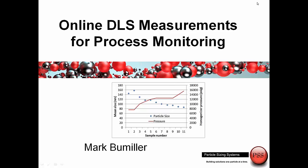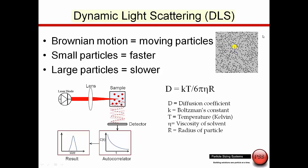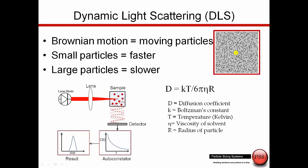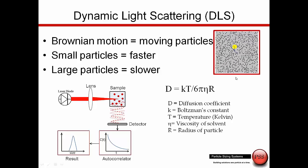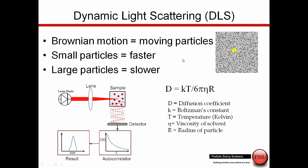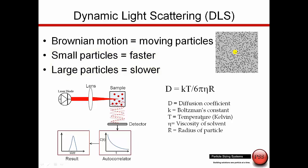The presentation today is on the topic of online DLS measurements for process monitoring. The technique we're using is dynamic light scattering. Dynamic light scattering picks up on the motion due to the Brownian motion of particles suspended in liquid. The liquid molecules impact the particle and it has a random thermal motion. That thermal motion is dependent on several things: smaller particles move faster, large particles move slower. This motion is dependent on the temperature, the viscosity, and the size of the particles.